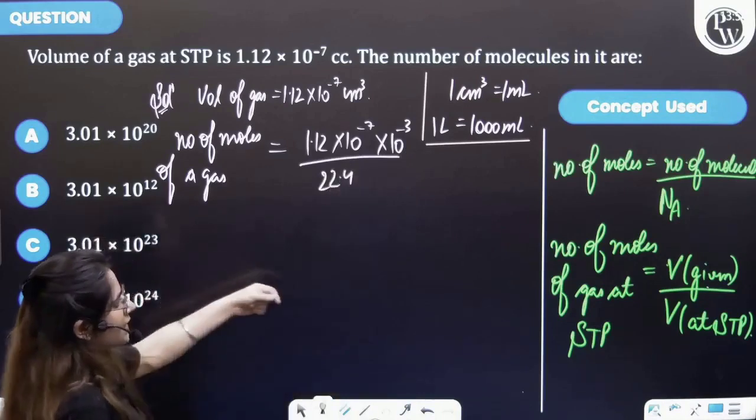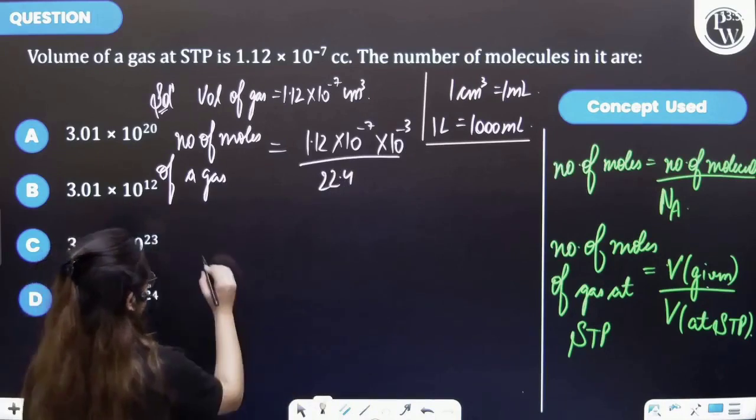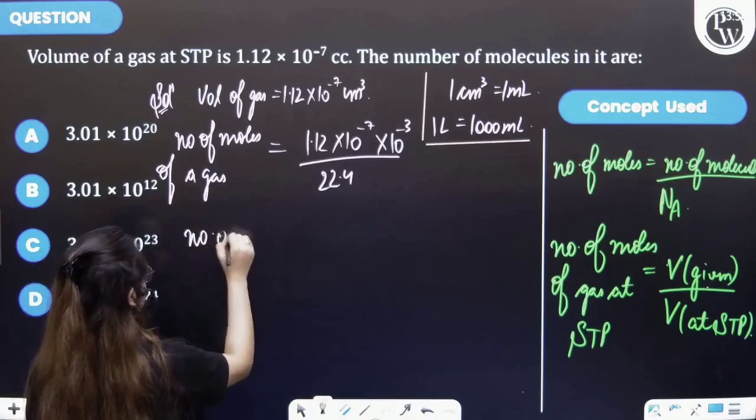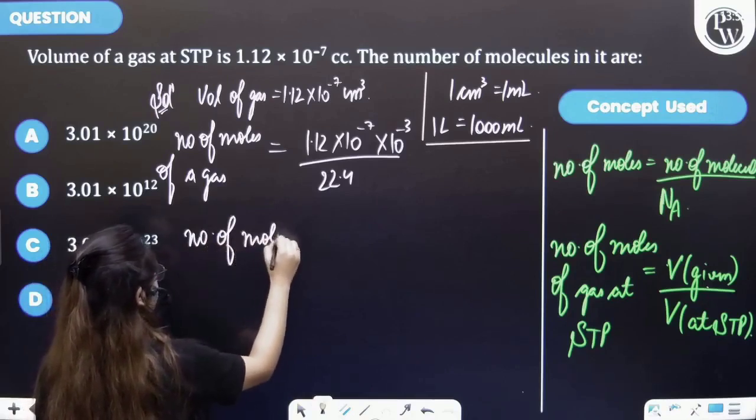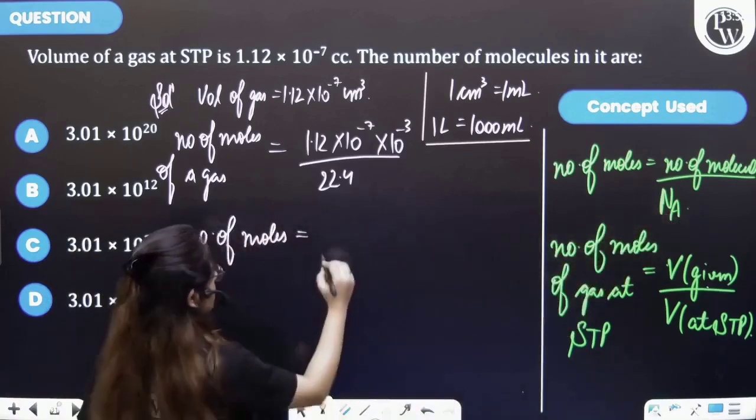Further, let's write the number of moles in terms of number of molecules. It is equal to number of molecules upon Avogadro's number.